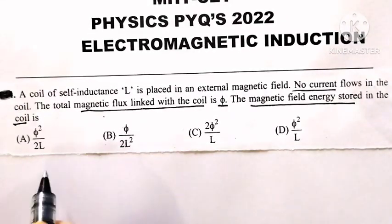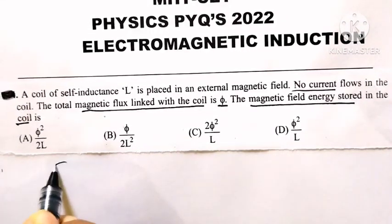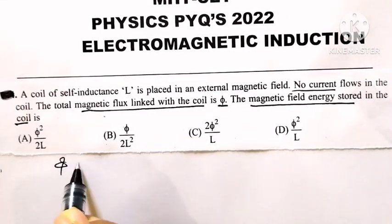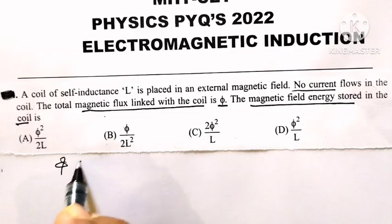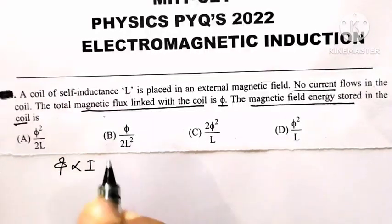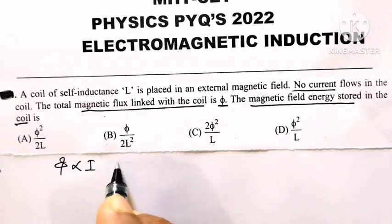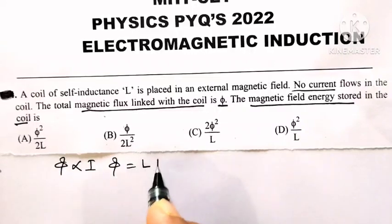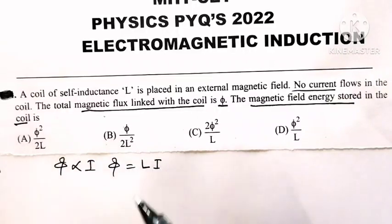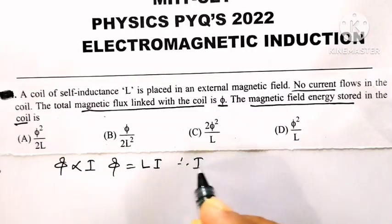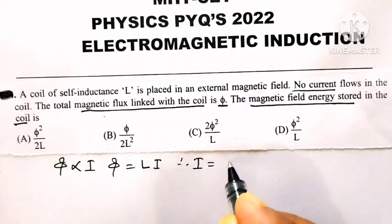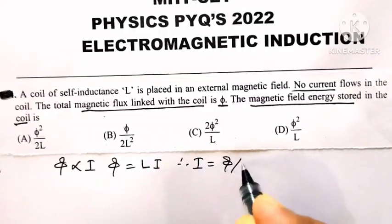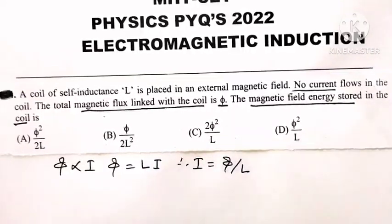Remember, magnetic flux linked with the coil is directly proportional to current I, or flux phi is equal to L into I. Therefore, current I is equal to flux divided by the self-inductance of the coil.